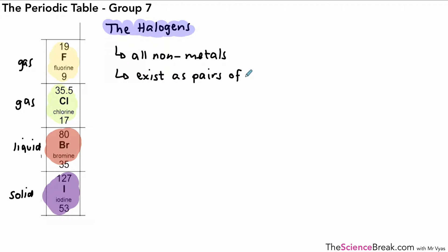They exist as pairs of atoms, so they don't exist as single atoms, they're in pairs. So we've got F2, Cl2, Br2 and I2. In other words, we've got two atoms that are joined together like this, that's how they exist in nature, and they are joined together by something called a covalent bond which we'll look at very closely in an upcoming video.